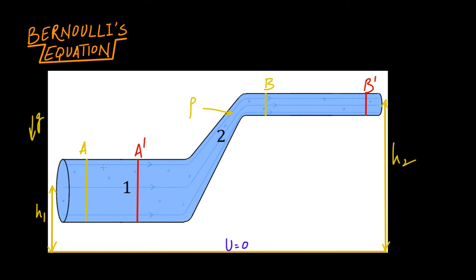For this purpose I have taken a pipe as you can see. There are two things to note in this pipe. First, the cross section of the pipe is different at both levels. At the lower level the cross section is a1 and at the higher level the cross section is a2. The location of these cross sections is also different — one is at height h1 from the ground and the other at height h2 from the ground.